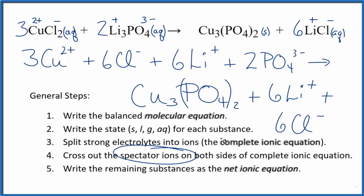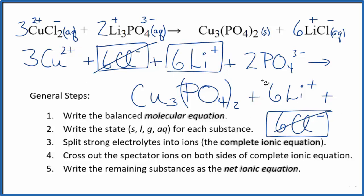Now we can cross out spectator ions. They're on both sides. In the reactants, I have six chloride ions. I also have that in the products. Those are spectator ions. We'll get rid of those. Six lithium ions here. And again in the products, spectator ions. They're gone.